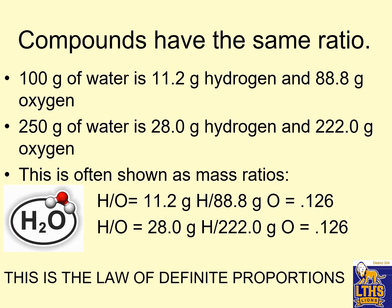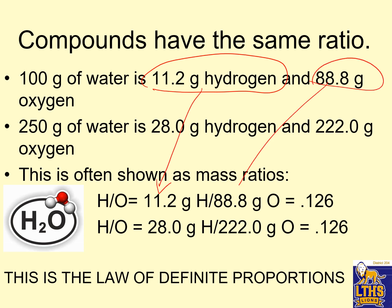Compounds are pure, so they have the same ratio of stuff. If you have 100 grams of water, then 11.2 grams of that water is hydrogen and 88.8 grams is oxygen. If you have 250 grams of water, 28 grams are hydrogen and 222 grams are oxygen. We can show what's called a mass ratio — we take 11.2 grams of hydrogen over 88 grams of oxygen and we get a ratio of 0.126.